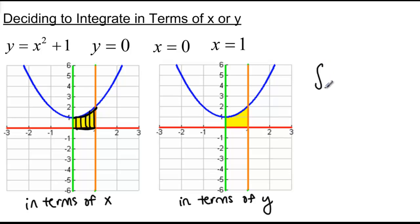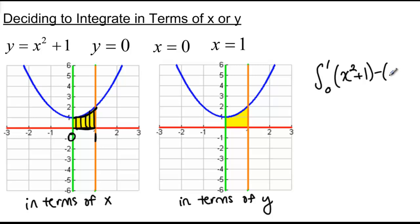We would get the integral from 0 to 1 — those are our x values and boundaries in the region — of our top function, x squared plus 1, minus our bottom function which is just y equals 0, dx.